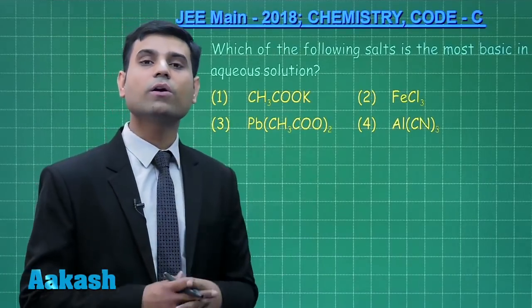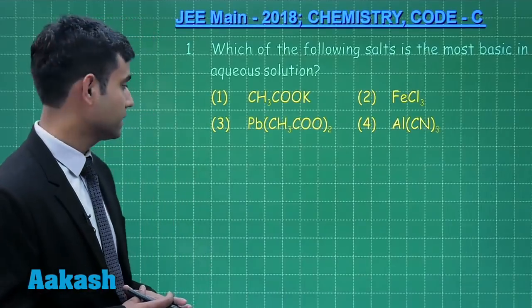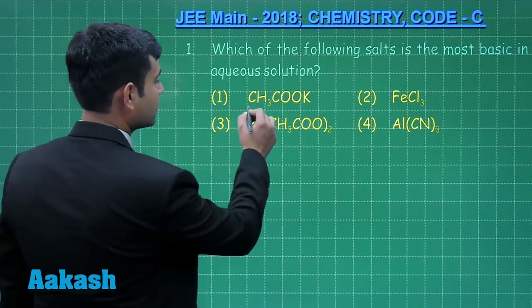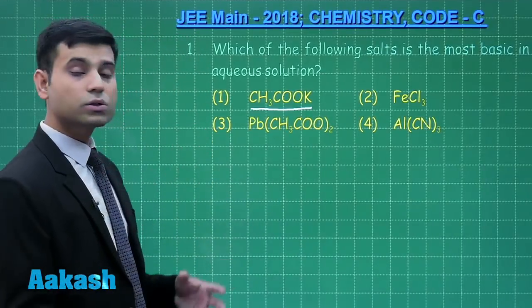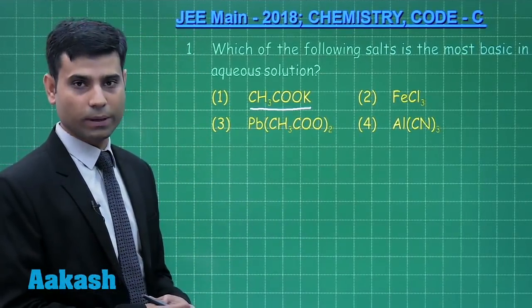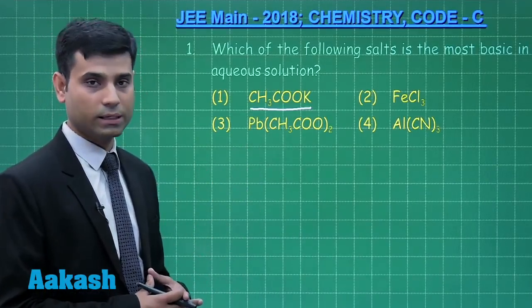This question belongs to equilibrium chapter, specifically salt hydrolysis. Option 1, potassium acetate, is a salt of weak acid with a strong base. So on hydrolysis, it will give us potassium hydroxide which is a strong base.